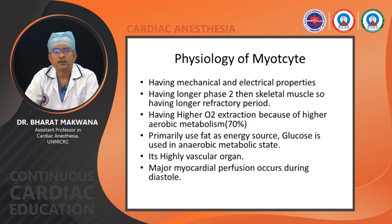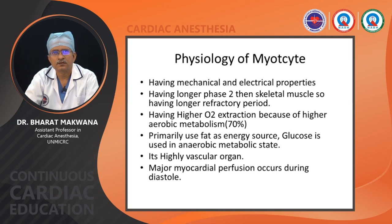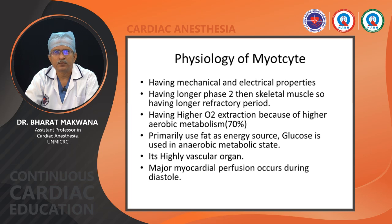The physiology of myocytes involves both mechanical and electrical properties. The myocardium has its own electrical property — it has an SA node as an action potential generator and pacemaker, a conduction system that conducts action potentials to ventricular muscles, a longer phase two than skeletal muscle giving a longer refractory period, higher oxygen extraction due to higher aerobic metabolism, high mitochondrial content, and a very high ATP need. It primarily uses fat as an energy source — nearly 70% of energy comes from fatty acids — while glucose is used during anaerobic metabolic states like ischemia.